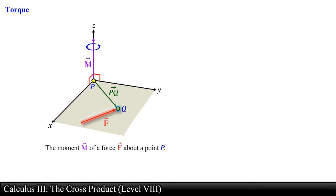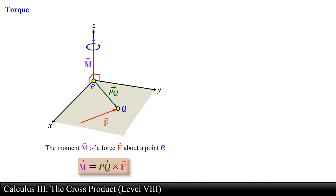In the figure shown, a force F is applied at point Q. So the moment of the force F about point P is given by the following expression: vector PQ crossed with the force F. The magnitude of the moment M measures the tendency of vector PQ to rotate counterclockwise about an axis directed along vector M, which is perpendicular to both vector PQ and the force F.